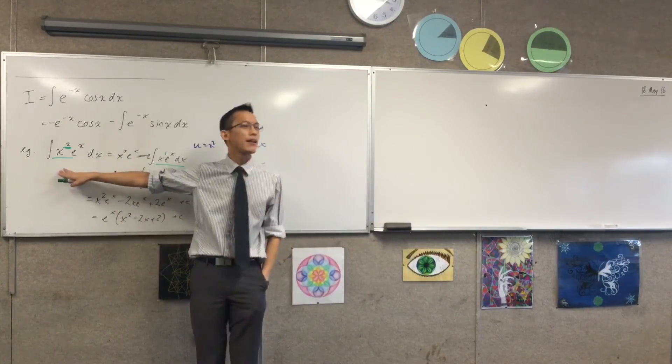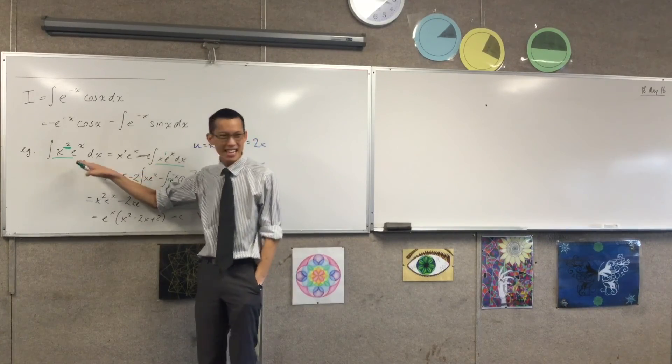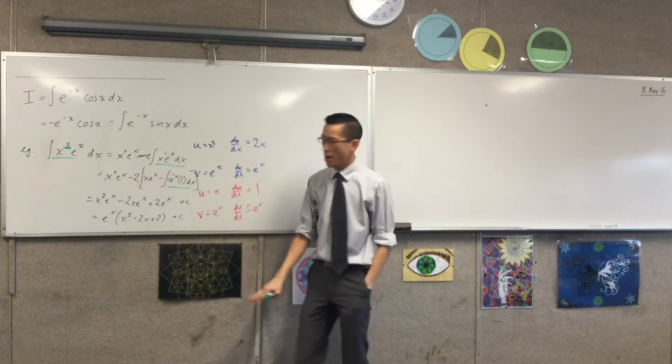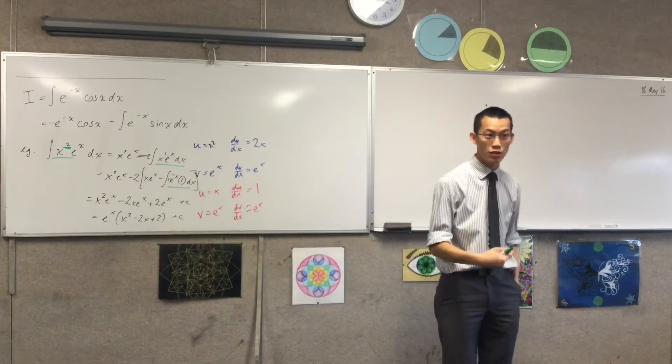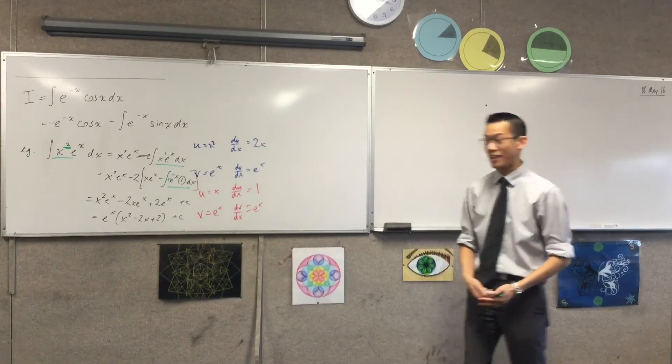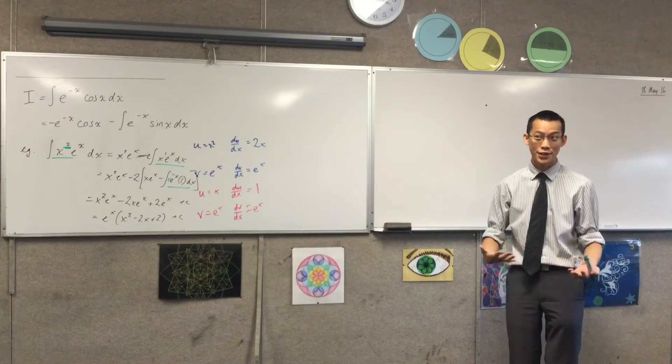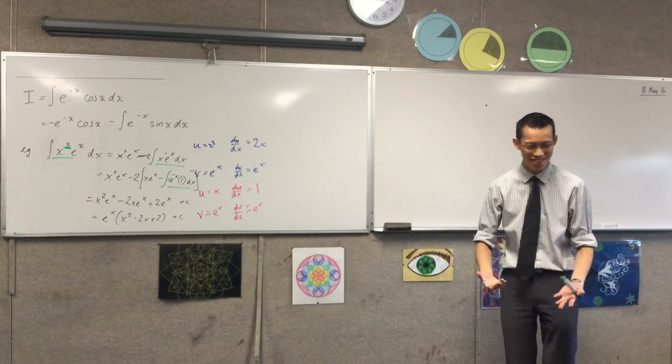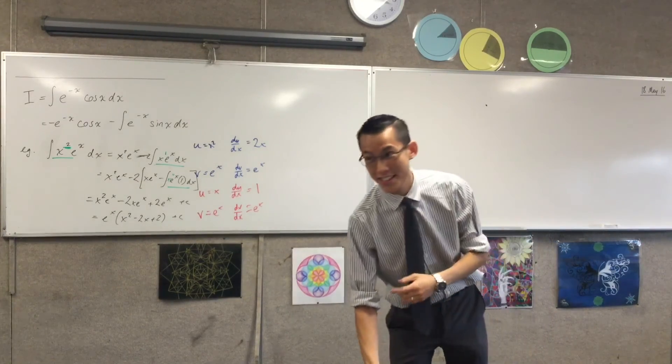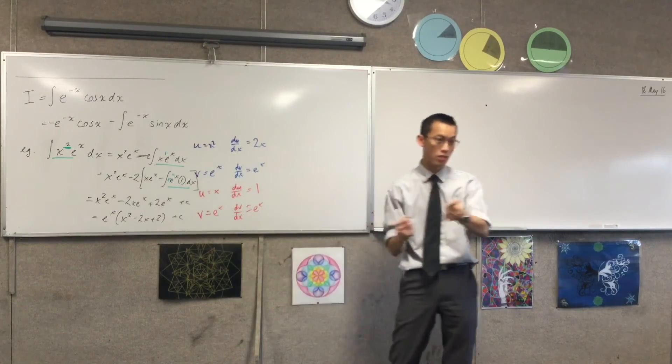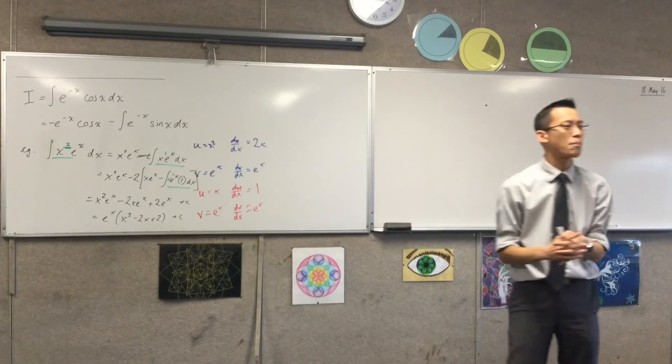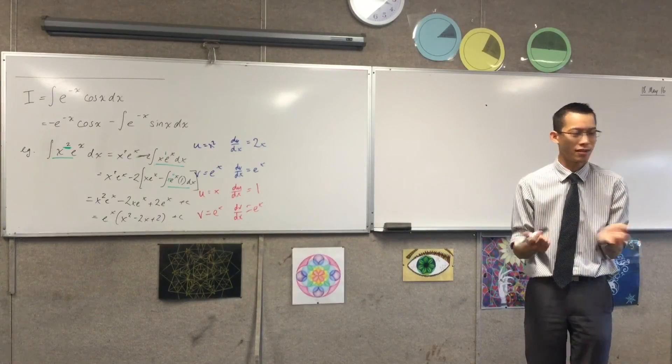So you can now imagine, suppose I had started with, this took two steps of integration by parts, two applications. If I'd made this, say, x to the 5, like the e to the x bit stays the same all the way through, but this is the part that reduces. So if I had x to the 5, I'd have to do this five times. If I had x to the 500, I'd have to do it 500 times. So whenever mathematicians see something like this, it's like, cool, I see a pattern here. We want to generalize. We want to say, well, what if the power was anything you like?